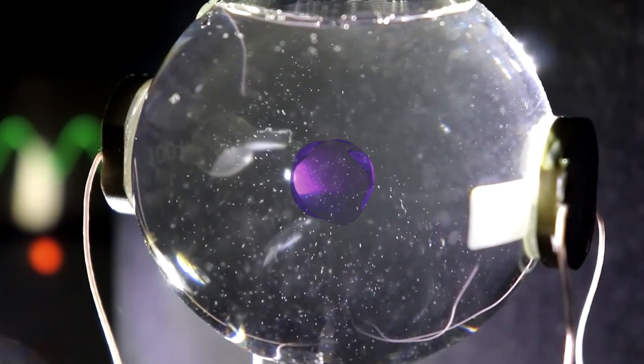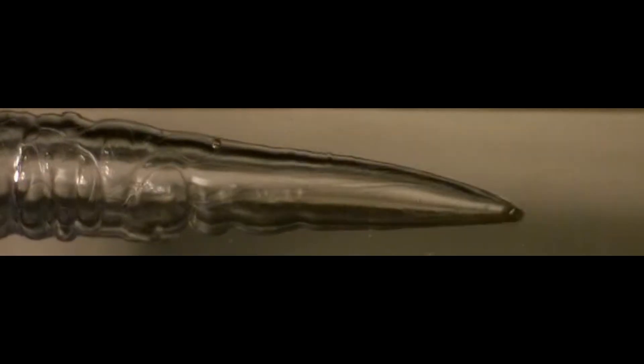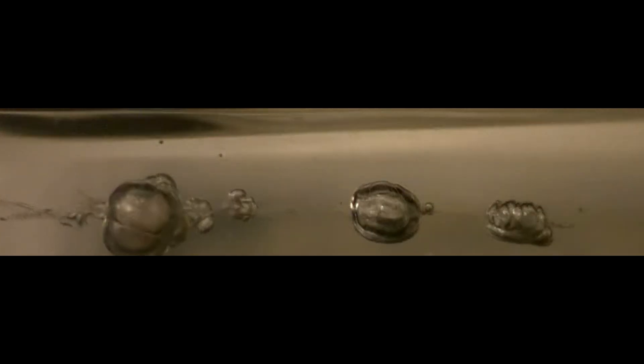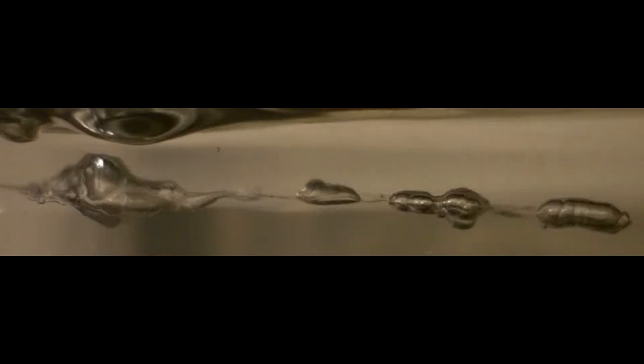Once the bubble is formed, the sound waves continue to push and pull on the liquid. This causes the bubble to expand and contract. At first, the bubble grows larger during the low-pressure phase of the sound wave, but as the high-pressure phase follows, the bubble collapses inward. The key to sonoluminescence lies in this rapid collapse. The bubble's size shrinks dramatically and quickly down to a fraction of its original size, compressing the gas trapped inside. The bubble doesn't simply pop. It shrinks in on itself with extreme force, creating a highly concentrated point of energy.